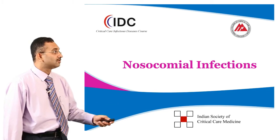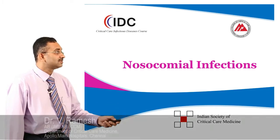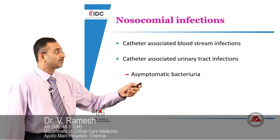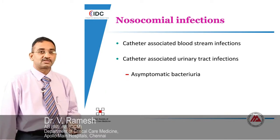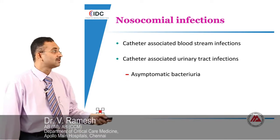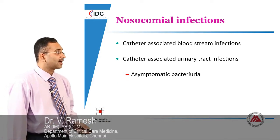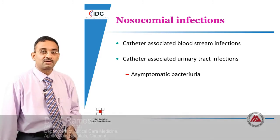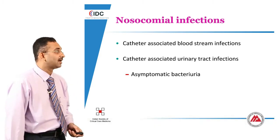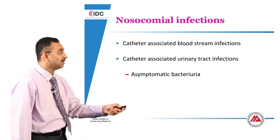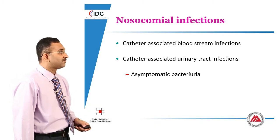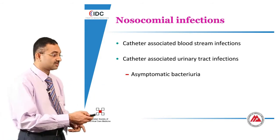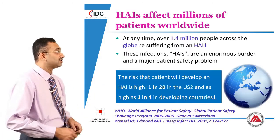Today we're going to discuss nosocomial infections. In this talk I'm going to cover catheter-associated bloodstream infections and catheter-associated urinary tract infections, with a little bit of mention about asymptomatic bacteriuria. Let's start by talking about catheter-associated bloodstream infections in the ICU.